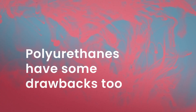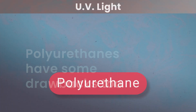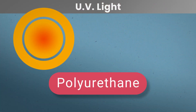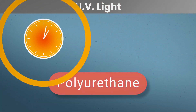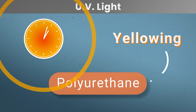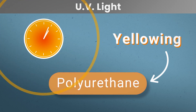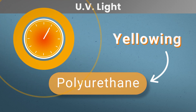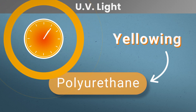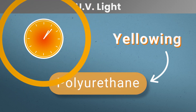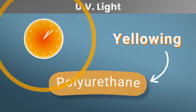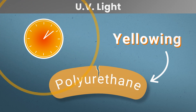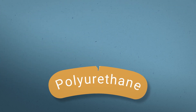Polyurethanes have some drawbacks too. Polyurethanes are sensitive to UV. Products made from polyurethane are known to turn yellow when exposed to UV light. This yellowing is not just an aesthetic issue, as it can lead to degradation in sealing applications.